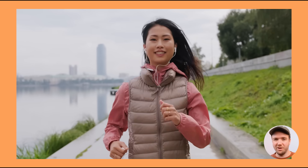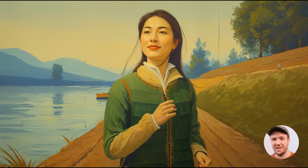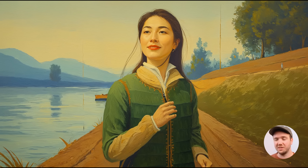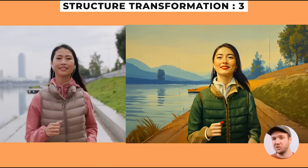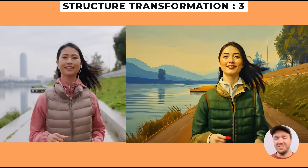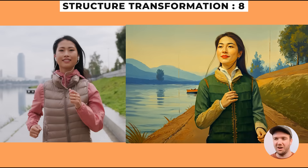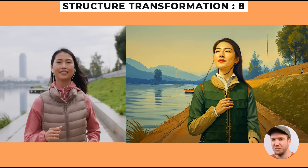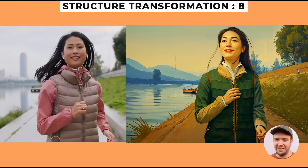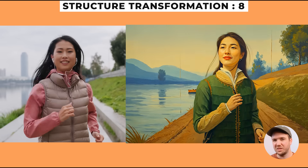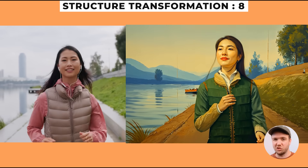Here's another example — a video of a woman running, where I restyled the first frame in Magnific to look like a painterly image. Looking at the generations, the lower values stick to the motion of the original video, while the higher values add some motion but don't quite nail it. So there's definitely a sweet spot in the middle of the structure transformation, and it's worth testing out different values to get the results you're looking for.